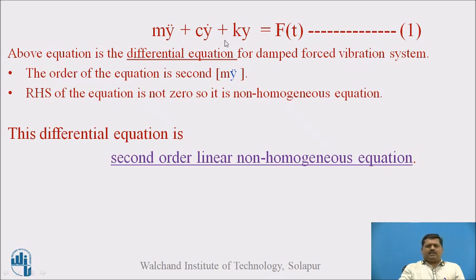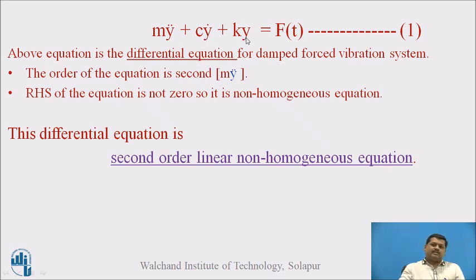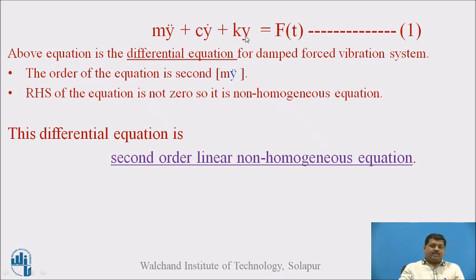Rearranging, the equation of motion is: mÿ + cẏ + ky = F(t). This is equation number one — a differential equation of order 2. It contains a y-double-dot term, a cẏ term, a ky term, and a non-zero right-hand side F(t). Therefore, this differential equation is a second-order linear non-homogeneous equation. To determine displacement y, we must apply the solution methods for second-order non-homogeneous equations.